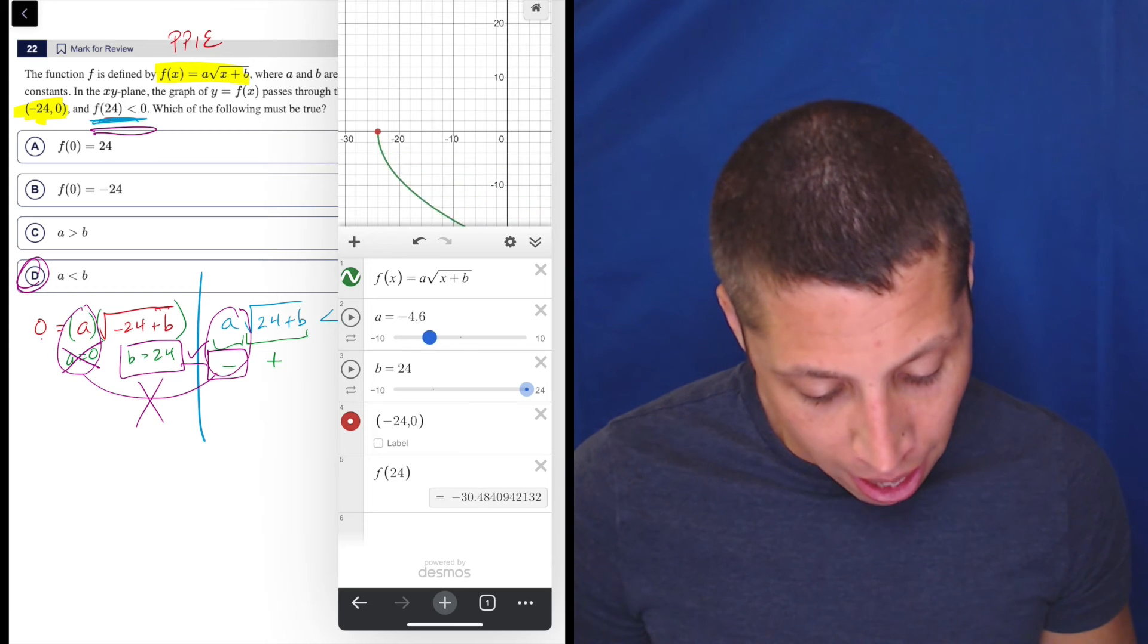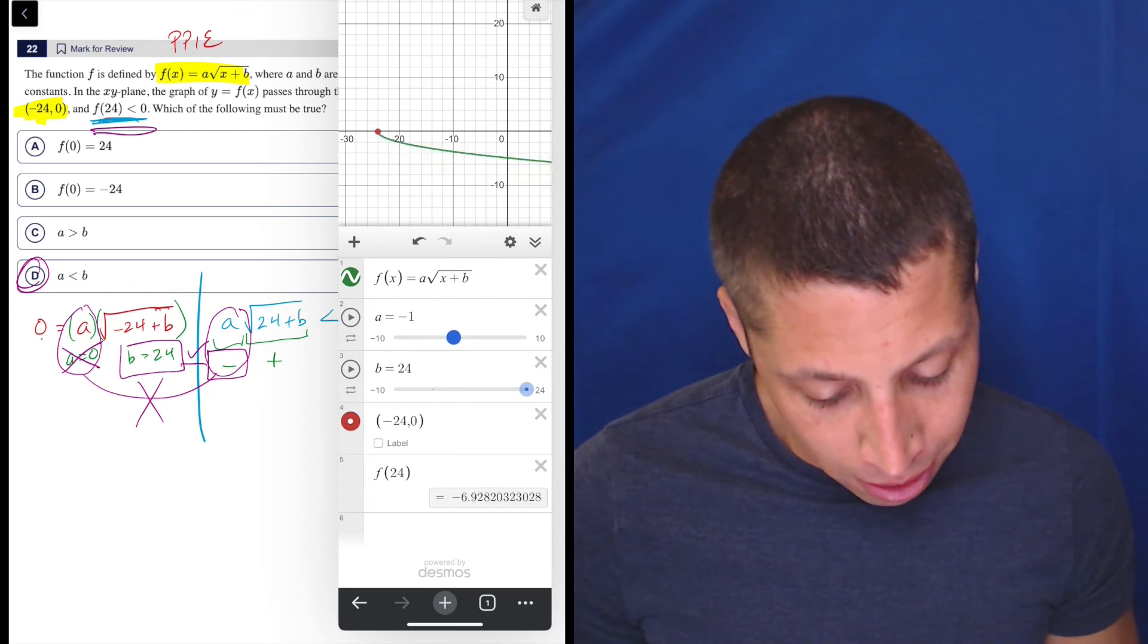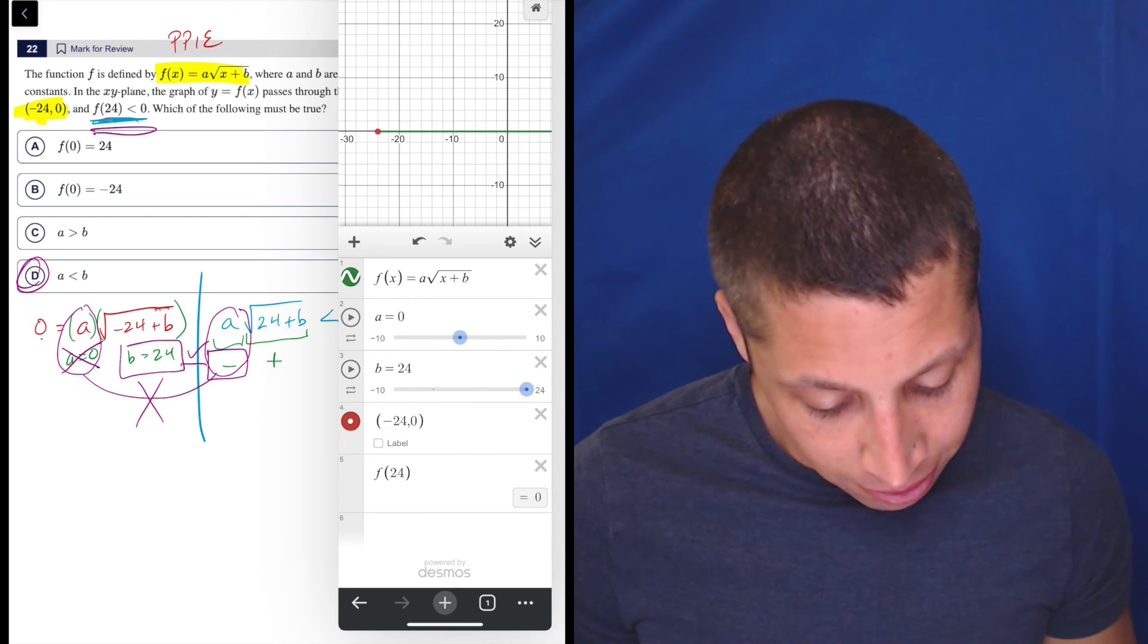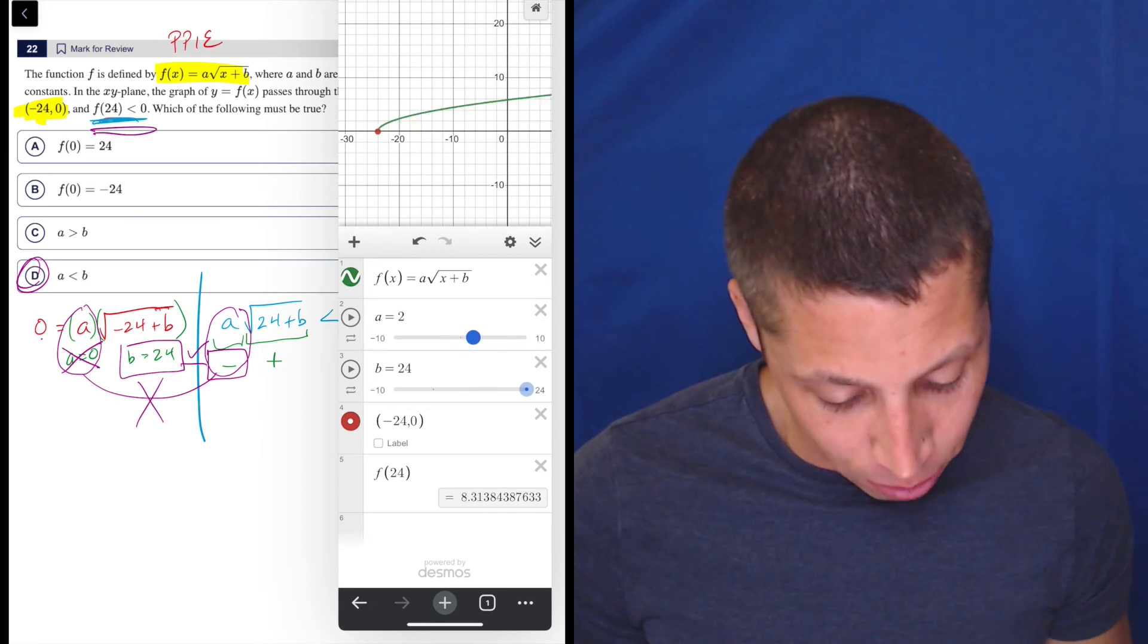And I can play with the value of A. And when we still hit the red point, we're still negative until A becomes 0, where F of 24 is now 0. And there we go.